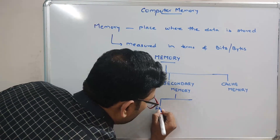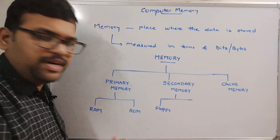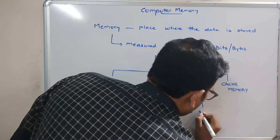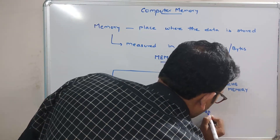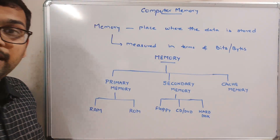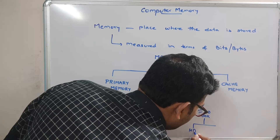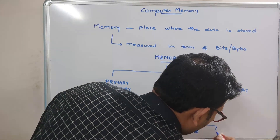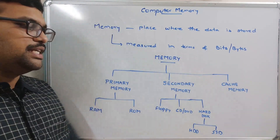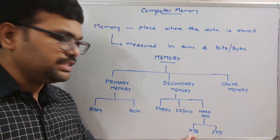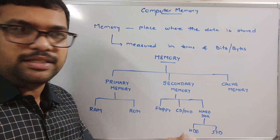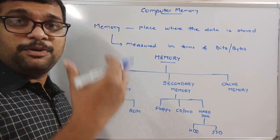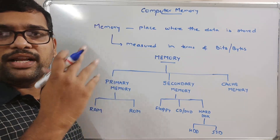Secondary memory includes floppy disk — which we used in earlier days — CD or DVD (optical drives), and hard disk. The hard disk is further divided into HDD (Hard Disk Drive) and SSD (Solid State Drive). SSD gives more speed than HDD and is more expensive. Cache memory is categorized into different levels: L1, L2, and L3 — based on the placement of the cache.